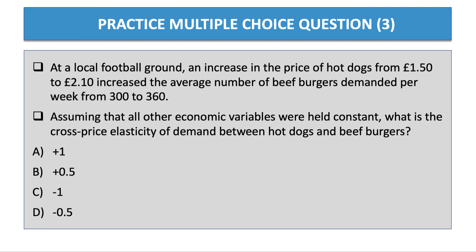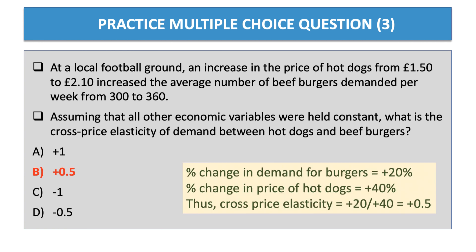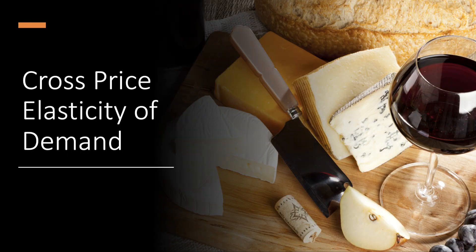Question three: At a local football ground, an increase in the price of hot dogs from £1.50 to £2.10 increased the average number of beef burgers demanded per week from 300 to 360. The answer is B — plus 0.5. The percentage change in demand for burgers is +20% (60 over 300), and the percentage change in the price of hot dogs is +40%. Dividing +20 by +40 gives +0.5, indicating they are relatively weak substitutes. The positive sign confirms they are substitutes. That completes our whistle-stop tour through cross price elasticity of demand.